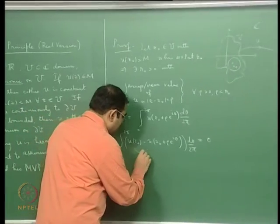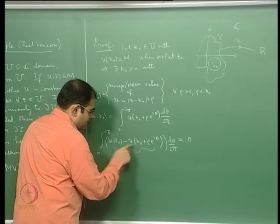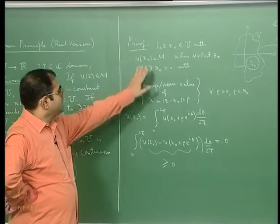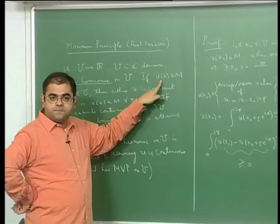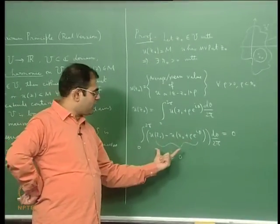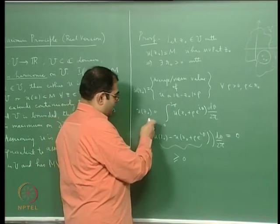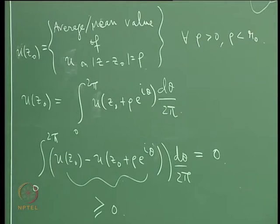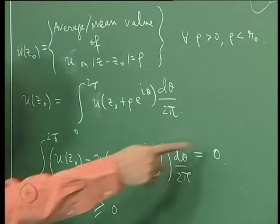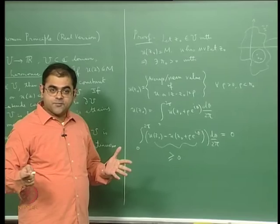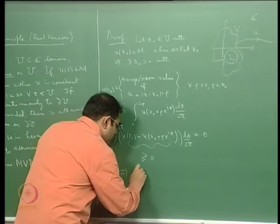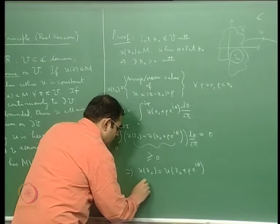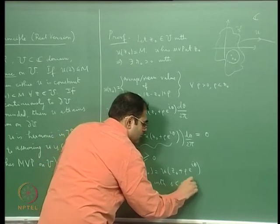The integrand is always greater than or equal to 0, because u(z0) = M and all other values of u are less than or equal to M. So we have the integral of a non-negative real-valued function over a closed interval equal to 0. This means the integrand must be identically 0. Therefore u(z0) equals u(z0 + ρe^{iθ}) for all ρ with 0 < ρ < r0 and all θ.